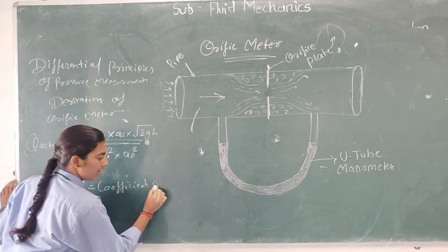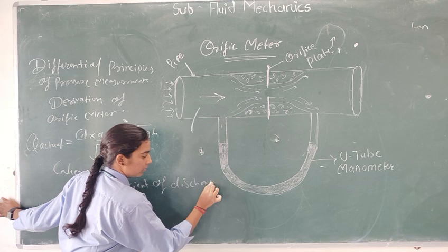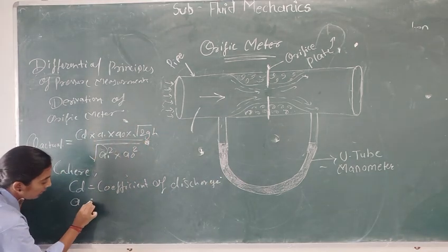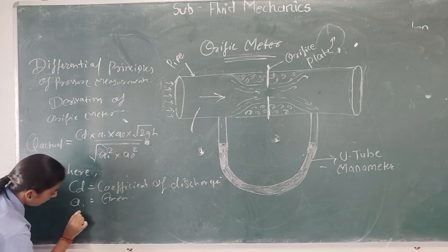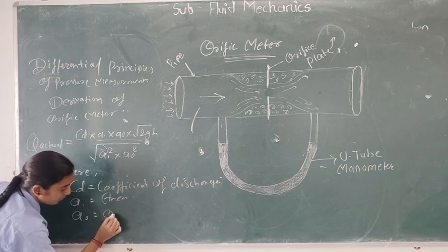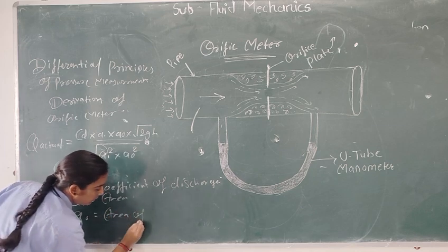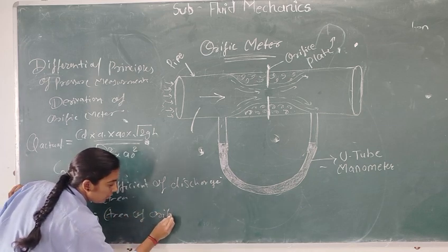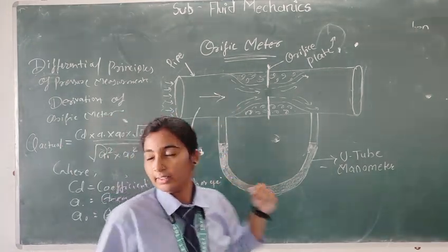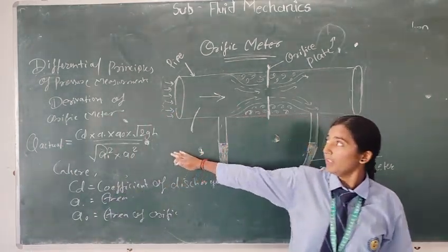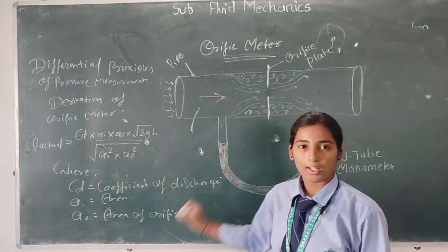The coefficient times area equals the area of orifice. This is the orifice meter and I explained the differential principles of pressure measurement. Thank you.